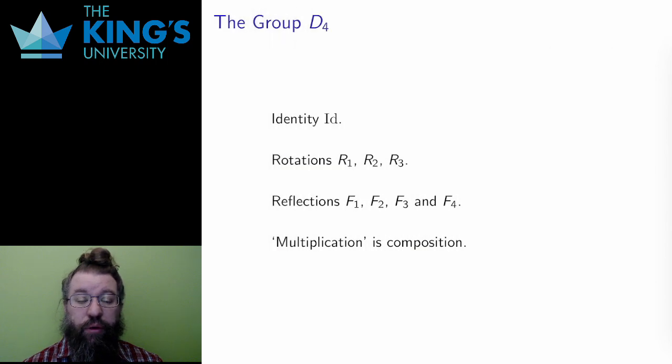This is the group D4. There are eight elements: the identity, the three rotations, and the four reflections. The operations, the multiplication is composition of the transformation. Equivalently, if I write the elements as a matrix, this is matrix multiplication.